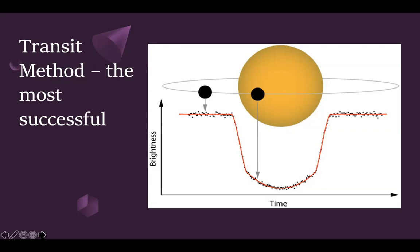There was a question about whether this works for tiny planets or asteroids. It doesn't work well for the smallest objects orbiting stars. It also depends on how bright the star is and how far away it is. Scientists usually find planets that are at least the size of Earth or bigger.